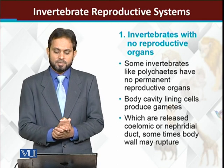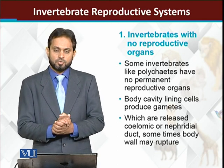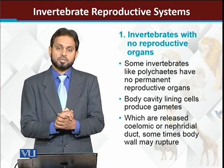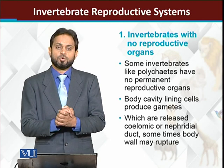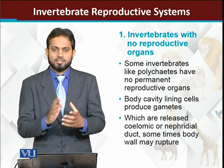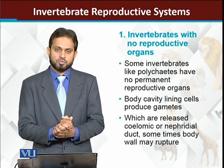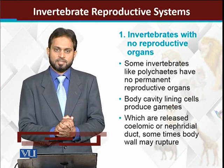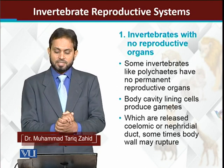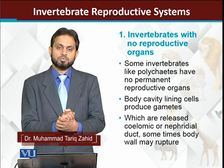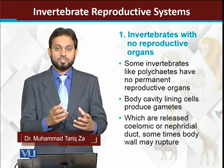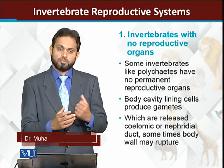Among invertebrates, we have a lot of animals which sexually reproduce, but without a proper permanent sexual reproductive organ. For example, polychaetes - polychaetes have ovaries which produce eggs.